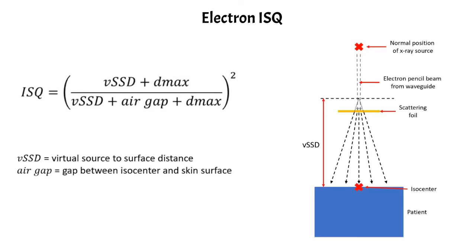And the virtual SSD is actually a function of the electron beam energy and also the size of the cone that you're using. So you have to measure it for all of the different energies and all of your different cone sizes as well.